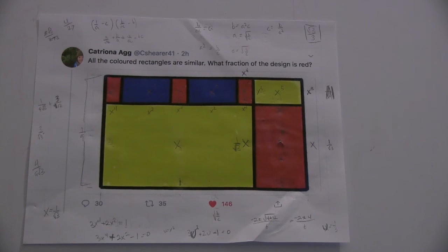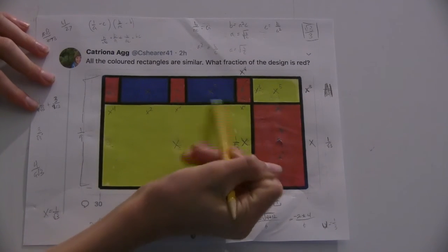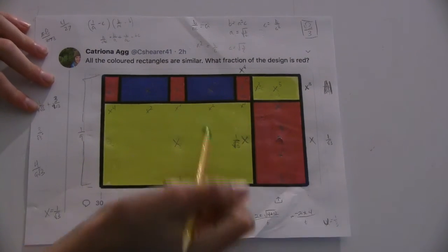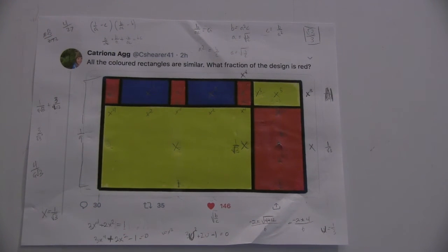But then we can see that all of these side lengths, x to the fourth plus x squared plus x to the fourth plus x squared plus x to the fourth, all line up and are equal to one. And so you get an equation from that, which you can solve.